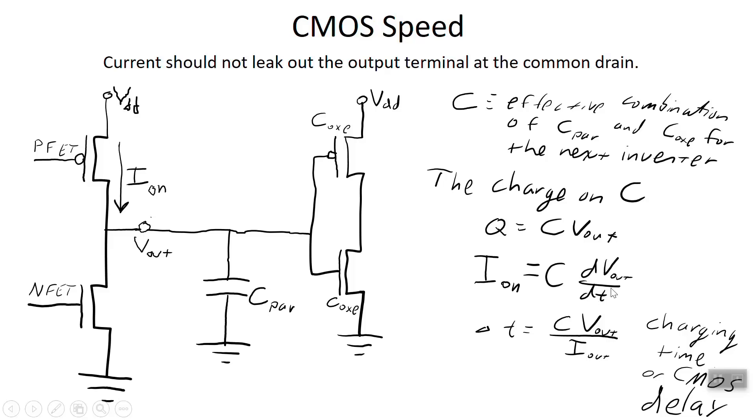Actually I'm going to write it as V out over delta T. I go from DV out to just V out and I go from DT to delta T. This delta T is the total amount of time spent charging the capacitances. The capacitors went from zero, at least if you look at the parasitic, it goes from zero to V out. It does that in a time delta T, which I'm going to rename tau in just a moment. This is the charging time for the capacitances, otherwise referred to as the CMOS delay.